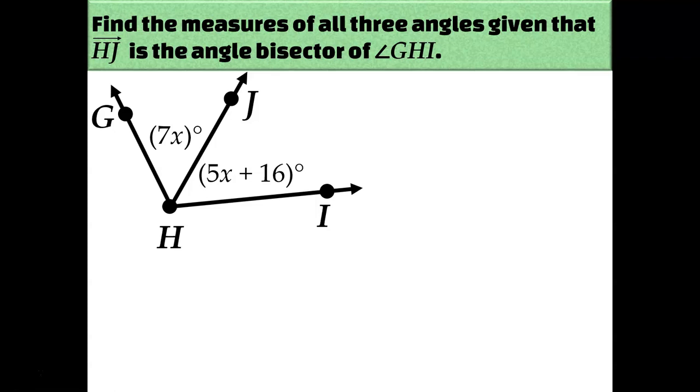Okay, let's see how you did. Since I know HJ is the angle bisector of GHI, that allows me to conclude that 7x must be equal to 5x plus 16 because these two angles have to be the same measure because they were created by an angle bisector. So I've got 7x equals 5x plus 16. I'll subtract 5x from both sides and divide by 2 to figure out that x equals 8.